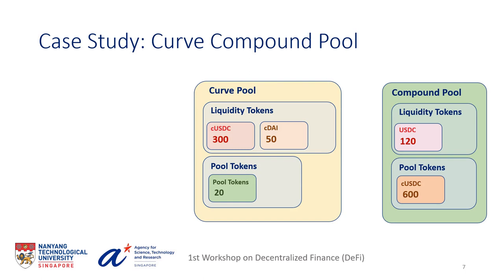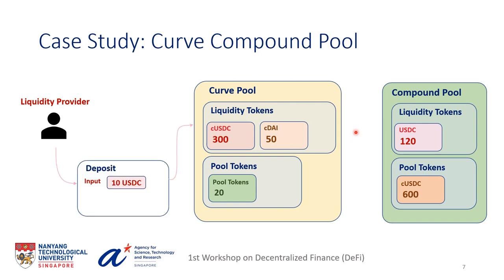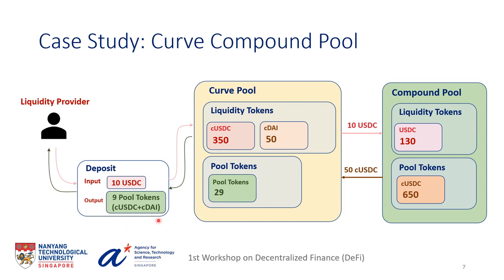In this work, we focus on the Curve-Compound pool — an actual pool in Curve that is a composition of Curve and Compound pools. When a liquidity provider supplies USDC into Curve, Curve transfers these tokens to Compound, where other users can borrow them. In return, Compound issues pool tokens called CUSDC, which the Curve pool uses for trading between CUSDC and CDAI — or the underlying tokens USDC and DAI. Curve also issues pool tokens to the liquidity provider. We analyze whether the interplay between these protocols can negatively affect either protocol or the end user.